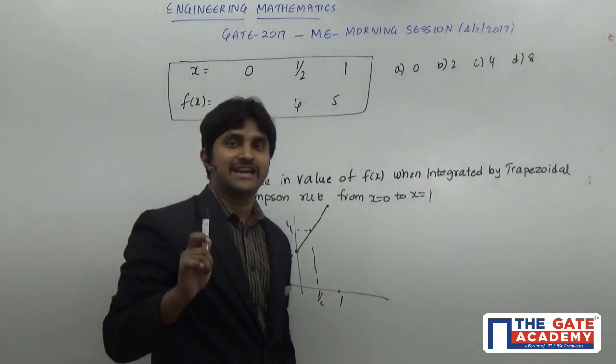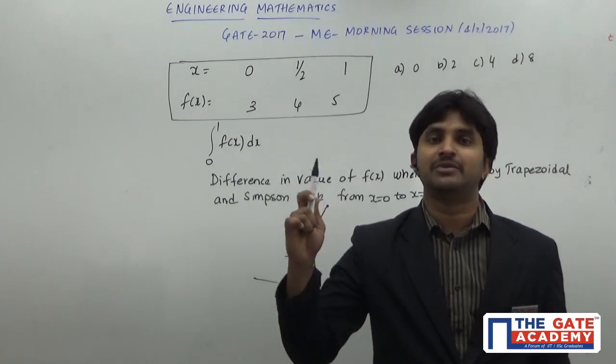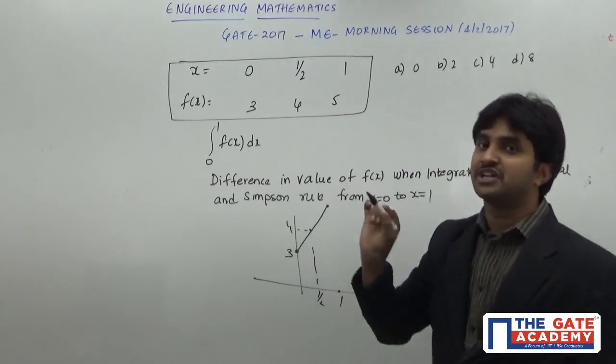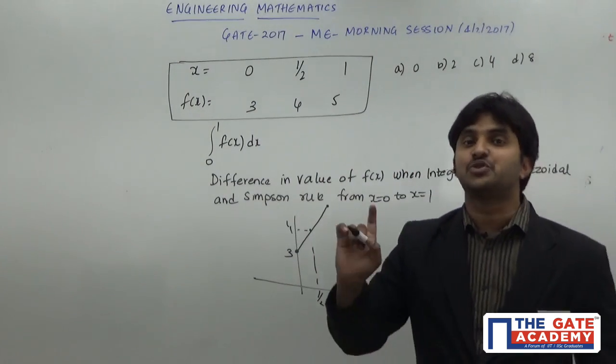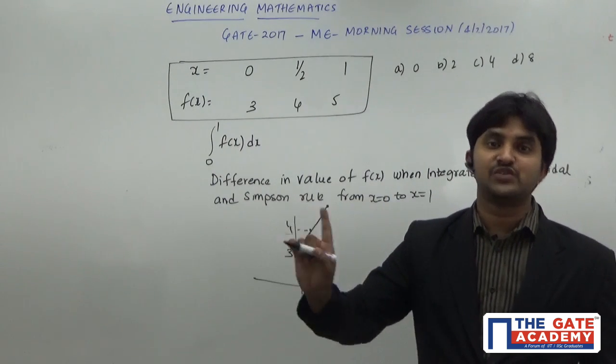Now when you are integrating a line using a trapezoidal method, the error using the trapezoidal method will be equal to 0. It means that when you are doing the numerical integration using the trapezoidal method, the answer is going to be the actual value. The answer is going to be the actual value.